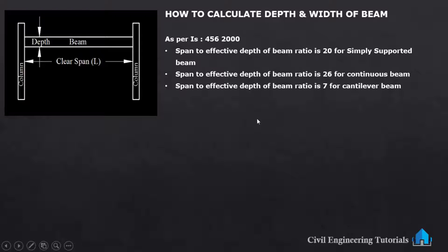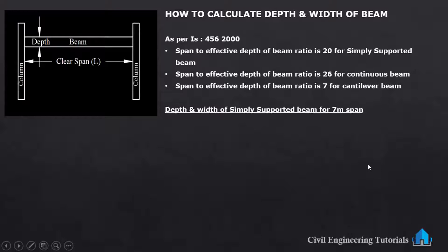For simply supported beam, span to effective depth ratio is 20; for continuous beam it is 26; and for cantilever it is 7. Now we will calculate depth and width of simply supported beam for 7 meter span. Length of beam is 7 meter.